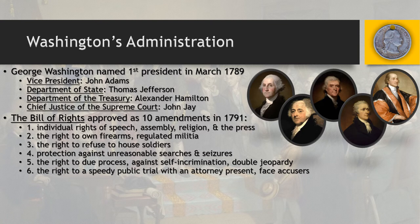The Sixth Amendment guarantees the right to a speedy public trial with an attorney and the right to face your accusers. If put on trial, you have the right to an attorney at all times — this feeds into the Miranda rights read upon arrest, which didn't come about until the 20th century. The right to face your accuser means disputes can be settled openly in a public forum — think of something like Judge Judy as a simplified modern example.